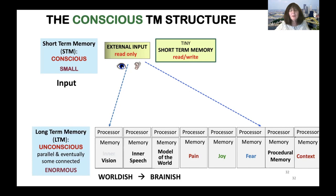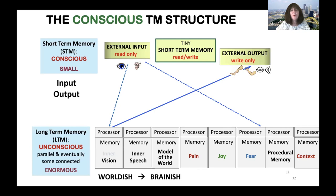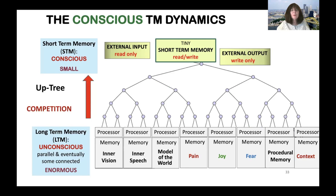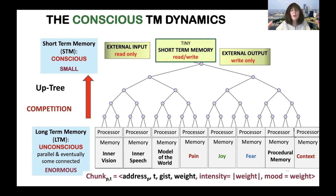In our model, inputs come directly to the long-term memory processors — not through short-term memory. Short-term memory is really a folder for a chunk of information that's going to be broadcast. We also have output maps from certain processors to actuators to affect the outside world, where brainish is translated back into worldish. The up-tree competition begins with all processors putting a chunk into competition — information they want to get to short-term memory. It could be a query, an answer to a query, or other important information.